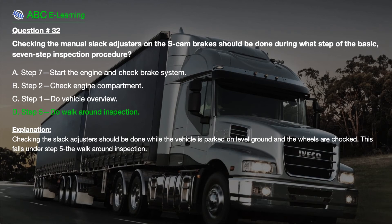Explanation: Checking the slack adjusters should be done while the vehicle is parked on level ground and the wheels are chocked. This falls under Step 5, the walk around inspection.